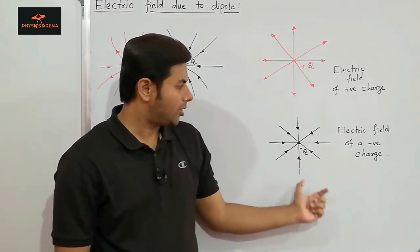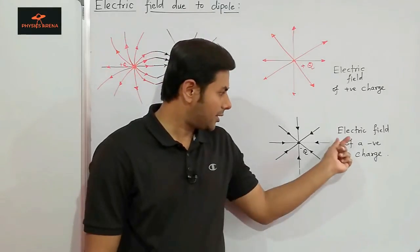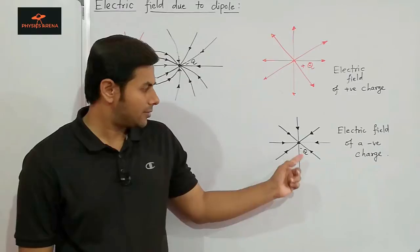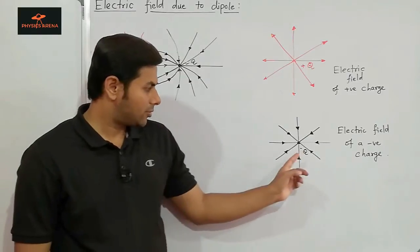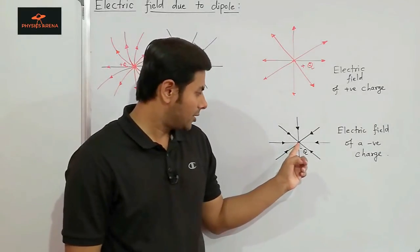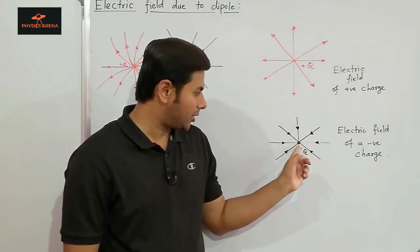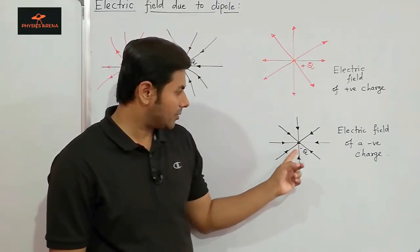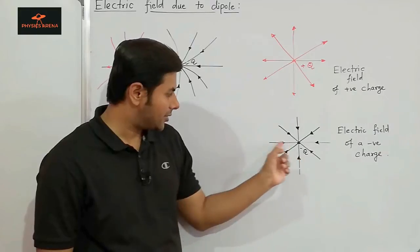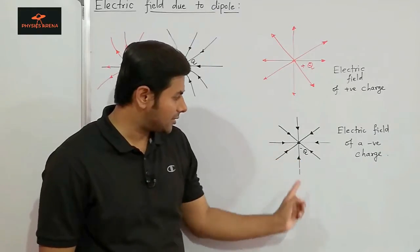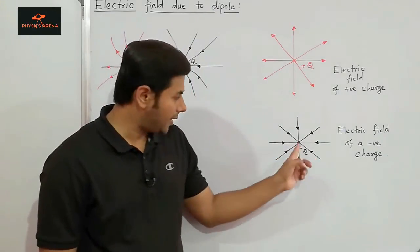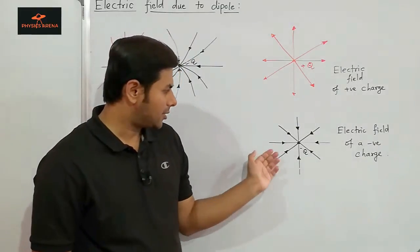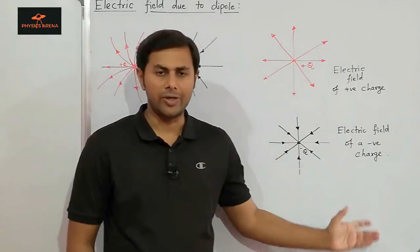We also know that the electric field of a negative charge looks like this. The charge is kept at this point and the electric field is shown by electric field lines which are directed towards the charge — they end at the position of the charge and the direction is radially inwards.